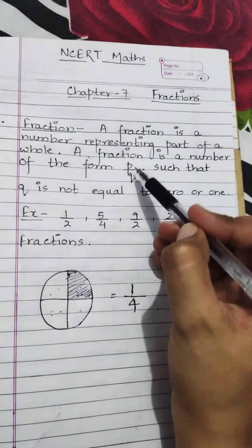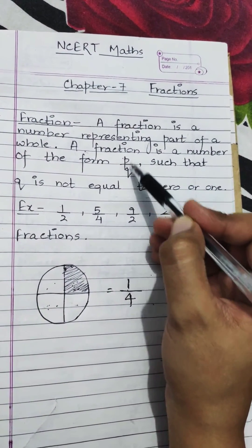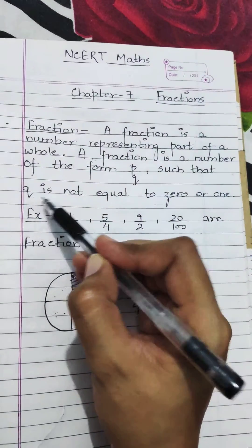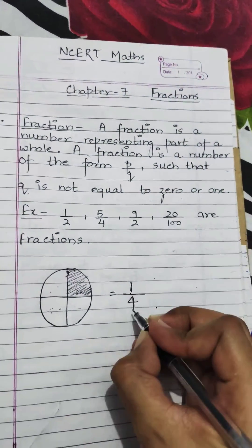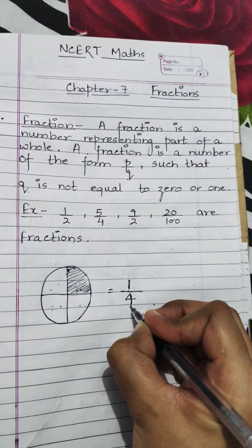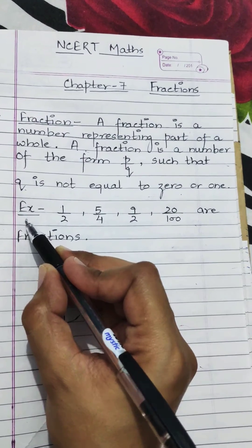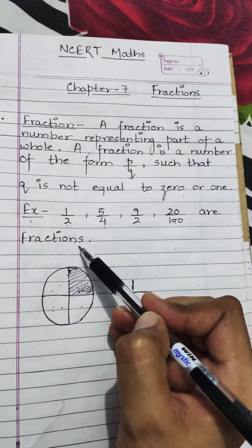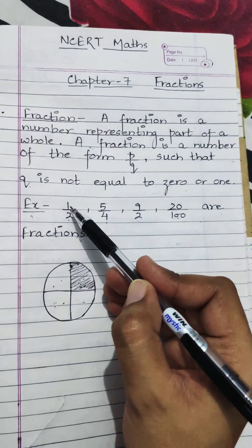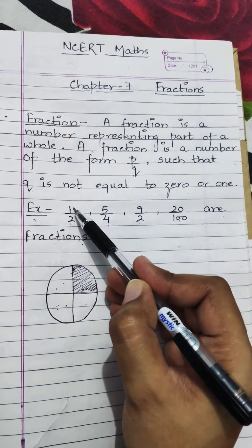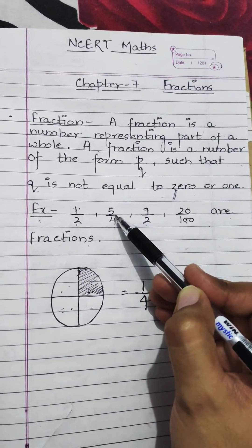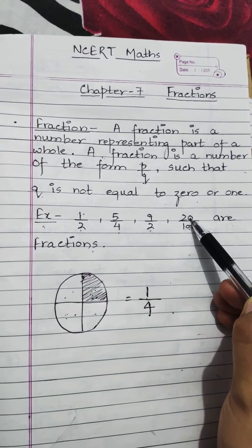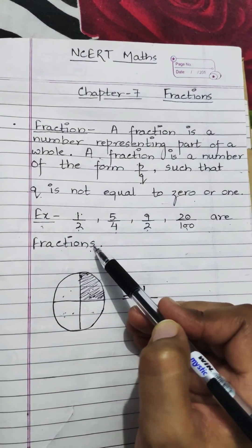A fraction is a number of the form p upon q, where p is your numerator and q is your denominator, such that q is not equal to zero. Examples: 1 upon 2, 5 upon 4, 9 upon 2, and 20 upon 100 are all fractions written in the form of numerator upon denominator.